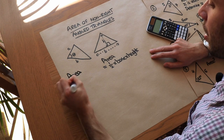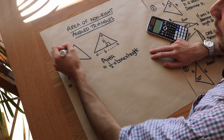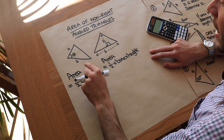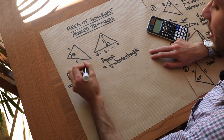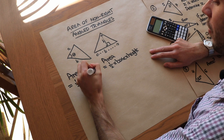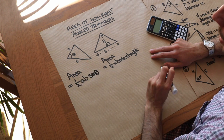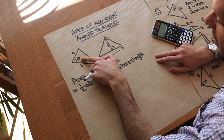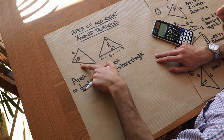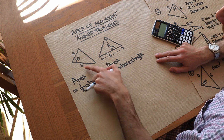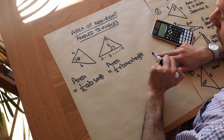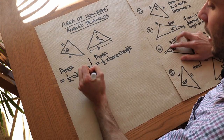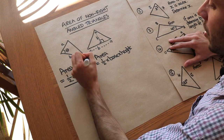The formula is: half times the product of the two sides — so half times a times b — and then we multiply by the sine of that angle. Note that the angle theta (a Greek letter) has to be between those two sides.